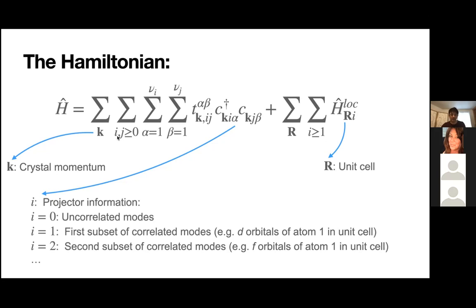The label r denotes the unit cell of the system if we have a periodically repeated lattice, and here we have the Fourier conjugate, which is the crystal momentum. We classify the fermionic degrees of freedom using labels i or j and alpha or beta. When i or j equals zero, the corresponding mode is uncorrelated — it appears only in the one-body term, not in the interaction term.